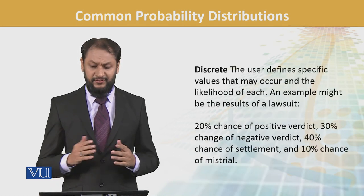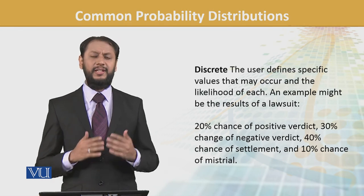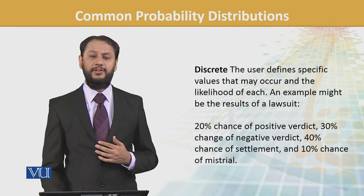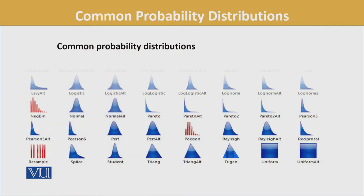These are all different possibilities. Discrete mein user-defined chances hain unke occur karne ke. Toh yeh diagram jo hum padh rahe hain, isse humein idea ho raha hai ki there are multiple types of distributions. Humein inko learn nahin karna, humein idea hona chahiye ki yeh exist karti hain aur humein inki implication aani chahiye — that is just for an idea of the learning curve. Thank you.